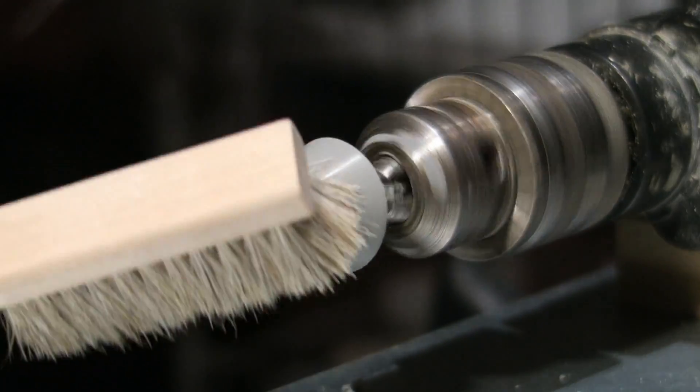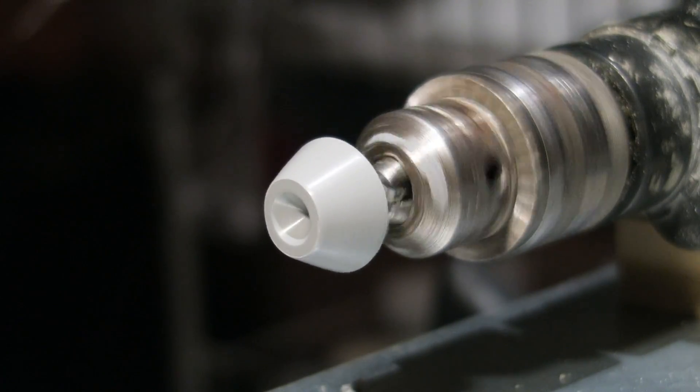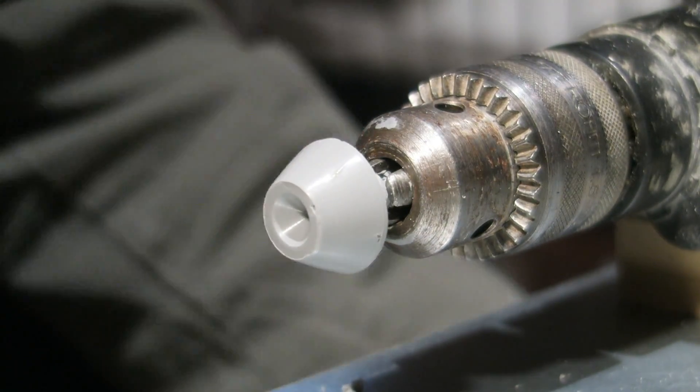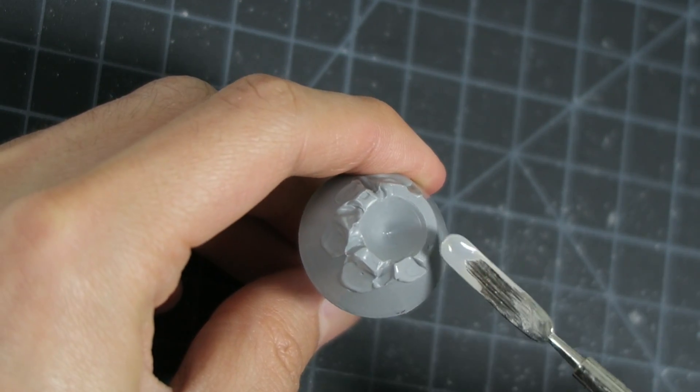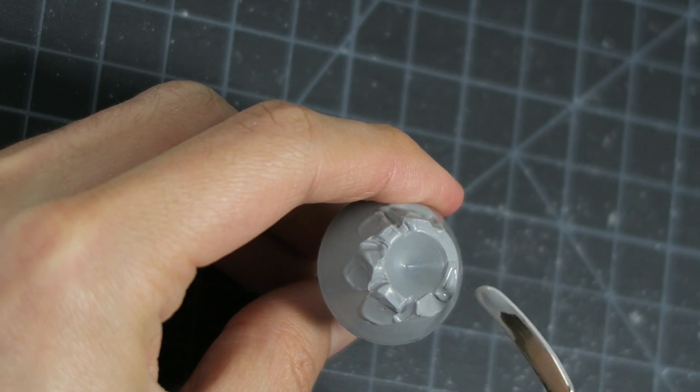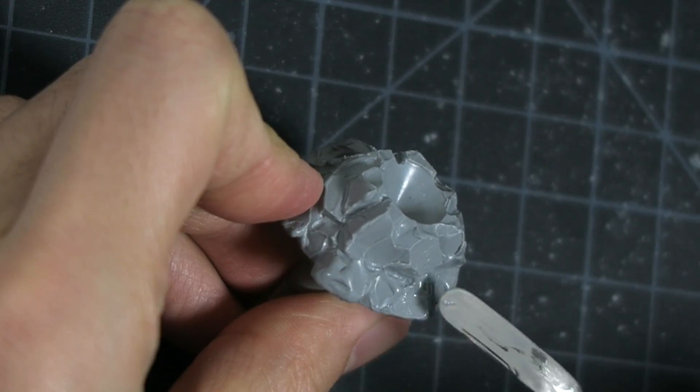Once I'm happy with the rough piece I can take it off my lathe and begin the next stage of sculpting. Another tool I use is this electric waxer. This gives me much more precise temperature control since it's electronically heated, unlike a torch which uses gas.